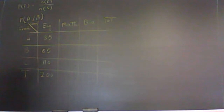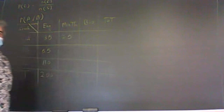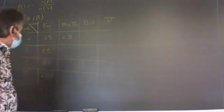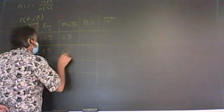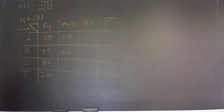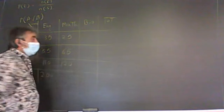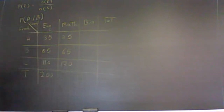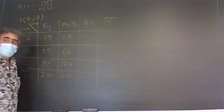Now let's go to math. Say 25 students got A's in math, 65 got B's, and 124 got C's. That's a total of 210 students in math.